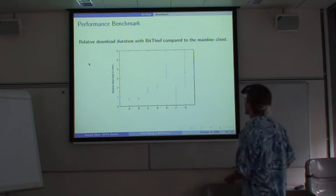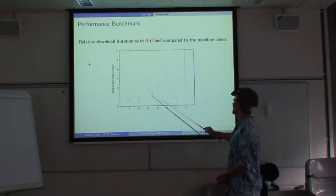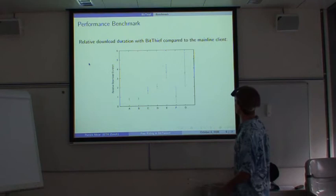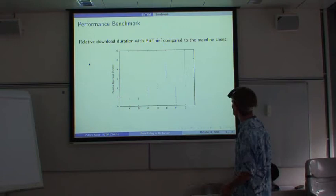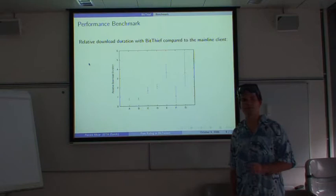Now, for comparison, the times with BitThief. For torrents A and B, we were slightly faster than the normal client without uploading any data. And for torrents C and D, we were a bit slower. For E, we were quite a bit slower. For F, we were about the same. And G, again, we were slower. But again, waiting four times longer for your download is not that of an issue if you can get it for free.